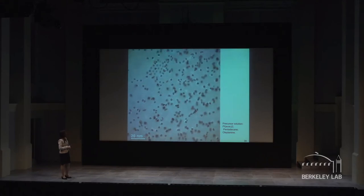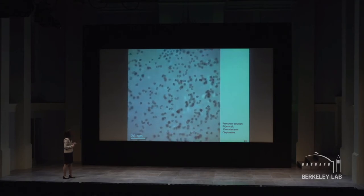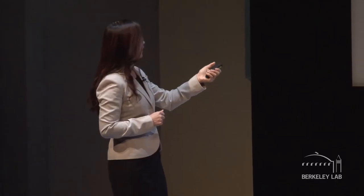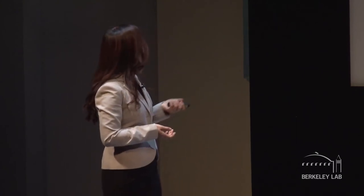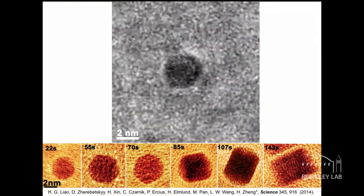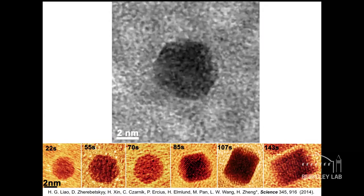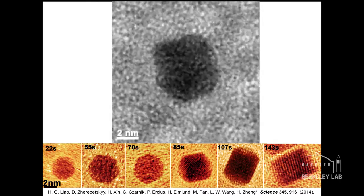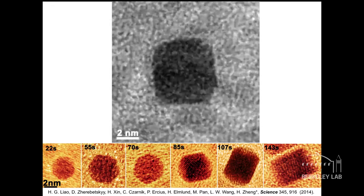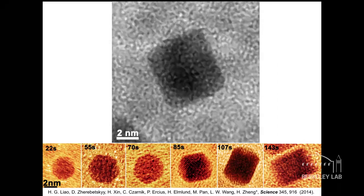This is a movie showing you the growth of small platinum crystals in liquid. You can see the majority of these crystals develop into a cubic shape. We can also have a closer look at one of these particles — we can see how it develops into a cubic shape. As it rotates at a certain angle, we can see the atoms line up. It's really amazing.